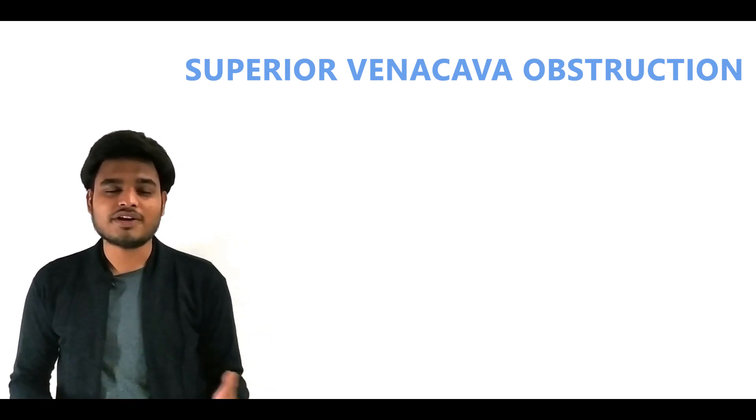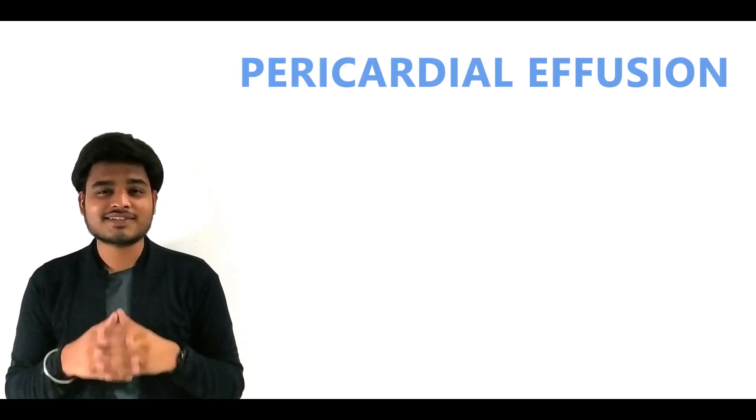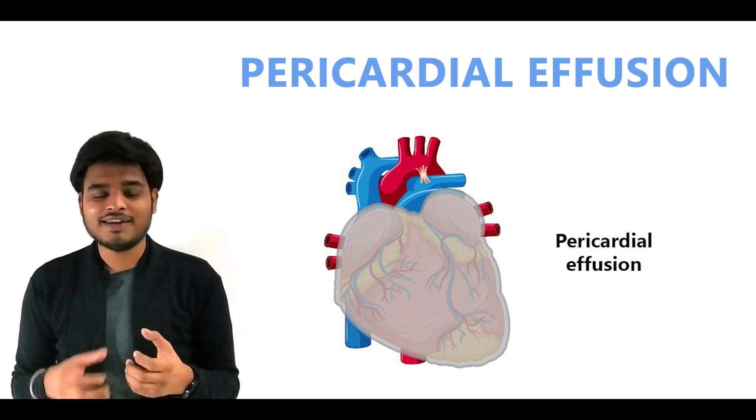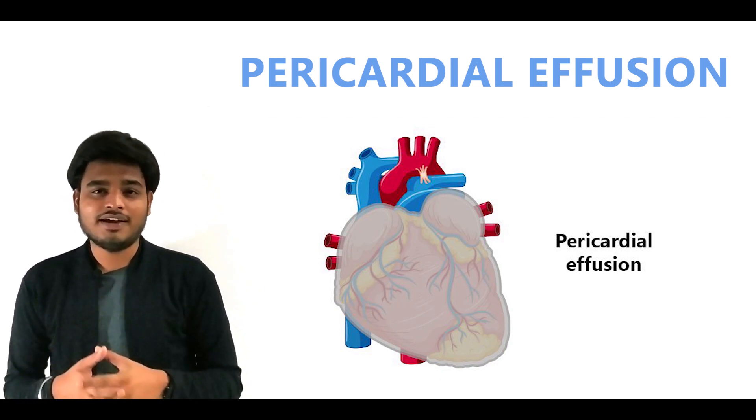Number three: pericardial effusion. Pericardial effusion means there is a collection of excess fluid between the heart and outer pericardium. This interferes with filling of the right ventricle and leads to an increase in JVP.